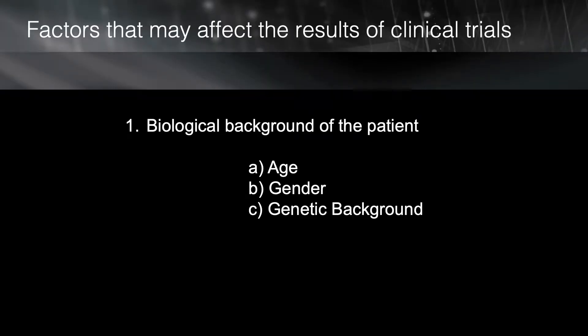This difference exists if we are ignoring three important variables. The first variable is the patient-related variables. Patients, based on their age, gender, and genetic background, respond differently to the trauma. It is clear that the rate of tooth movement in children and adults is different. Therefore, when we are selecting our samples to study the effect of macro osteoperforation, the age gap in our samples can affect or obscure the result of our clinical studies.